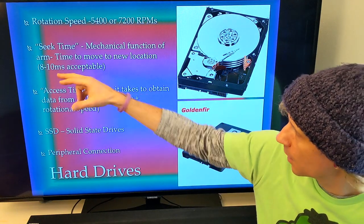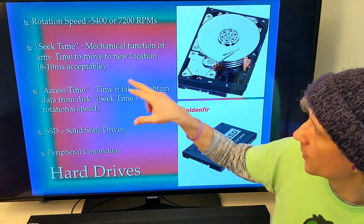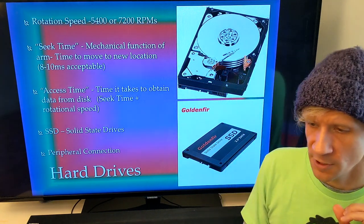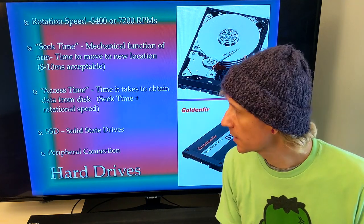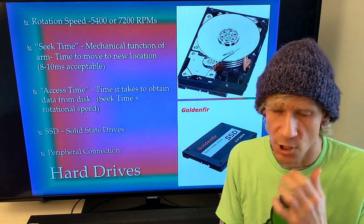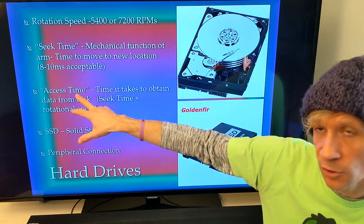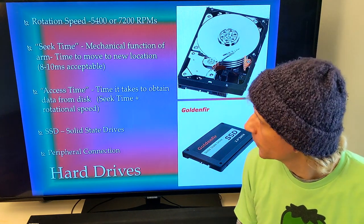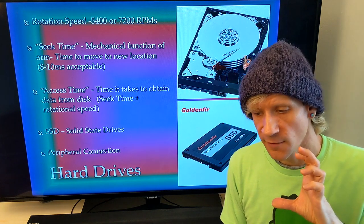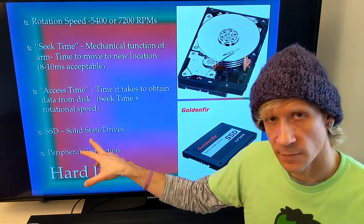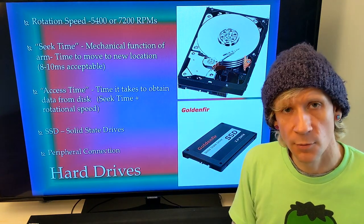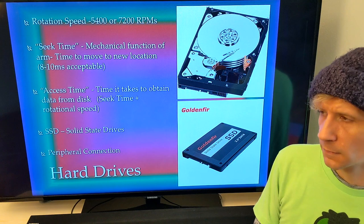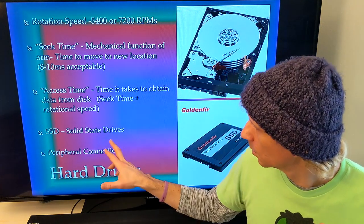Important specs to look for if you can find them: seek time is the mechanical function of the arm moving to a new location — if you can find one around eight to ten milliseconds, you should be okay for large audio track sessions. Access time is the time it takes to obtain the data, combining seek time and rotational speed. Generally speaking, if you're looking for an audio drive that's not solid state, look for a seek time in the range of eight to ten milliseconds and a rotational speed of 7200 RPM.